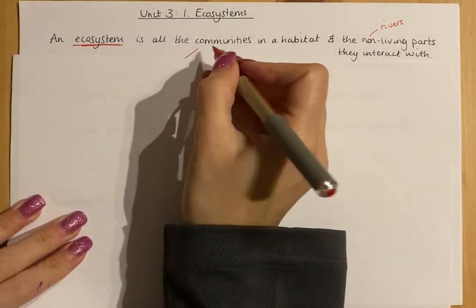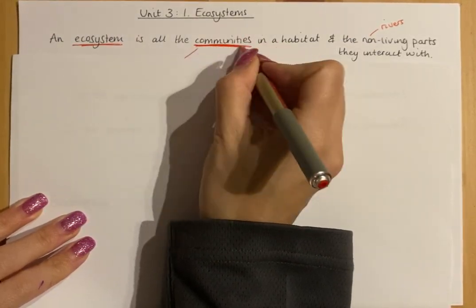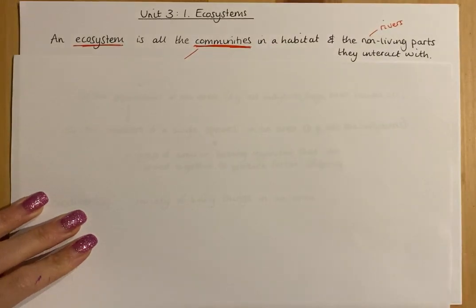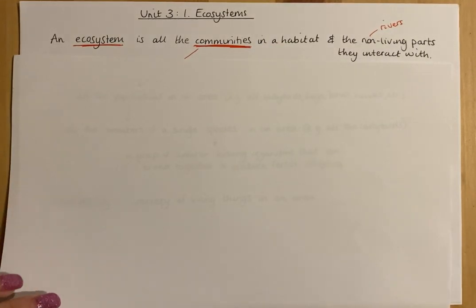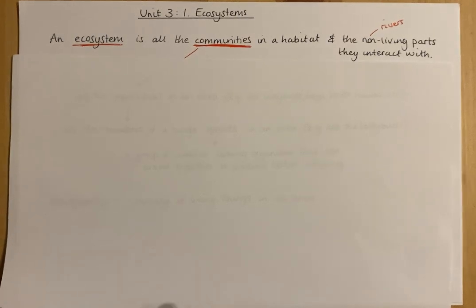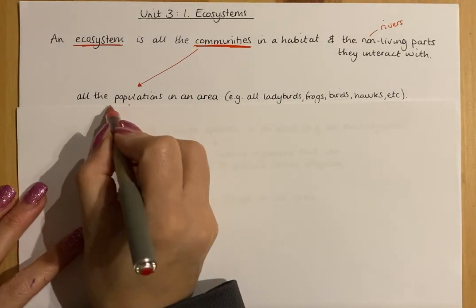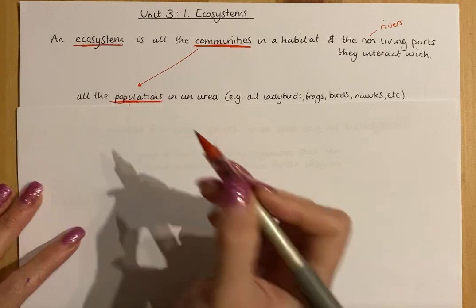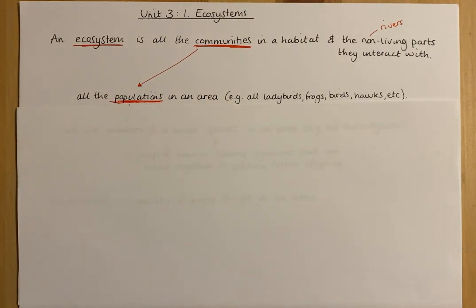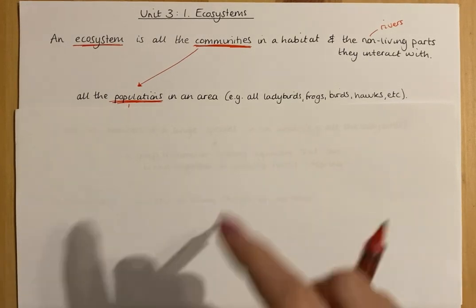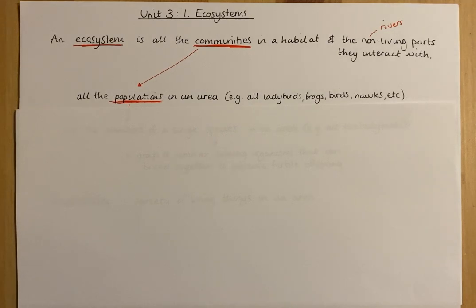Within that, you'll need to know what a community is. You'll have heard the word community in general terms, like a community centre, but in this topic a community refers to all the populations within an area — so all the different organisms in an area. For example, all the ladybirds, frogs, birds, hawks, lizards, acorns, holly bushes, daisies — all those different living organisms.